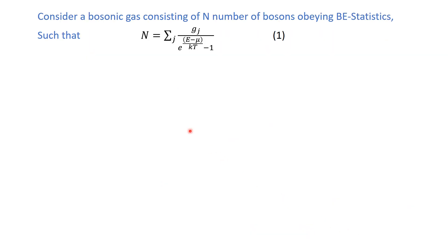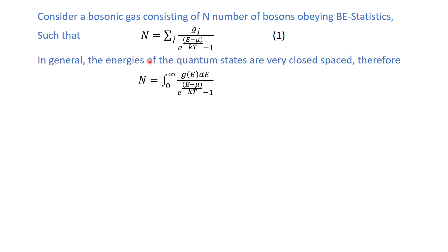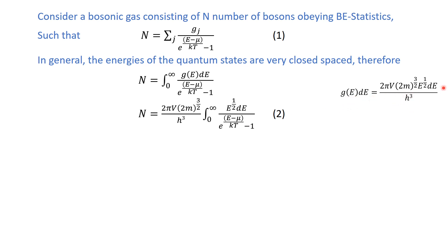We are going to discuss certain properties of the Bose-Einstein condensate using the Bose-Einstein statistics. According to Bose-Einstein statistics, the number of bosons occupying a state can be written as an equation where Gj is the degeneracy, E is the energy of the state, mu is the chemical potential, K is the Boltzmann constant, and T is the absolute temperature. Since energy states are very close in spacing, we replace the summation by integration, giving equation number 2, where g(E)dE is the number of energy states between E and E+dE.